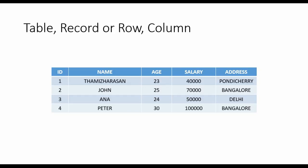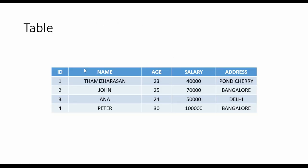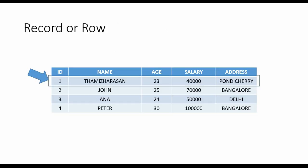In this video we will see what is a table, a record or row, a column, and fields. What you are seeing now is this slide, which shows a table consisting of different rows, records, and columns. The highlighted thing is called a row or a record.